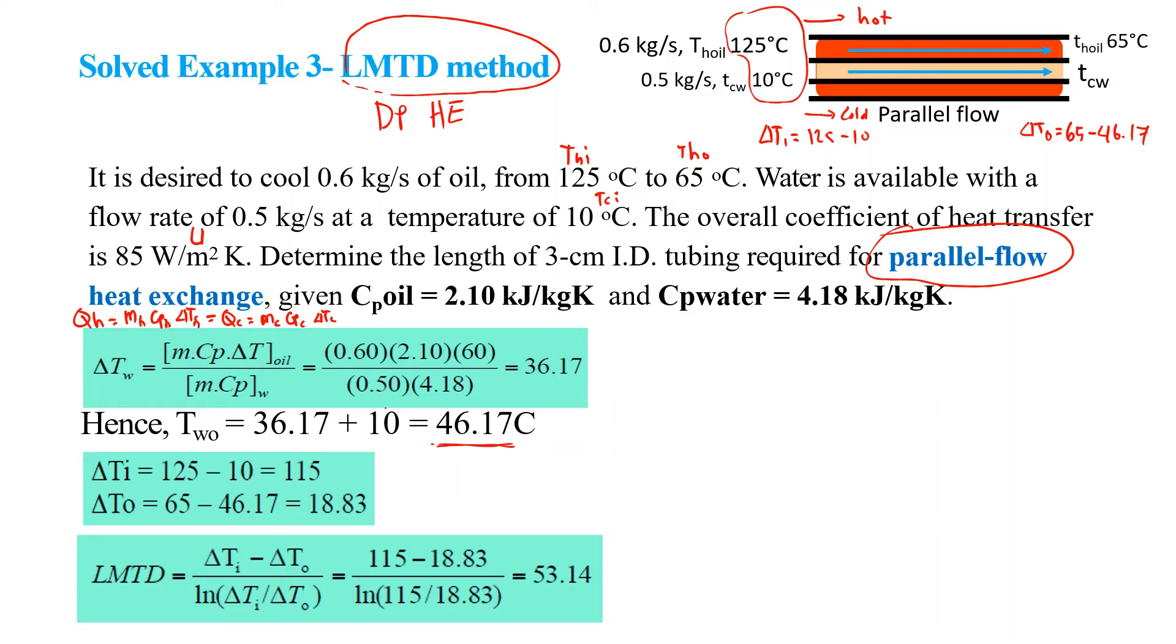Since there is a big difference between the two ΔTi and ΔTo, you can expect that we will have different LMTD. Here we find out the LMTD equals 53.14.